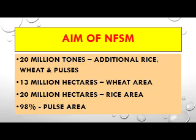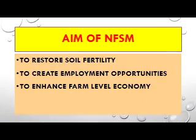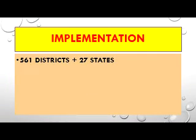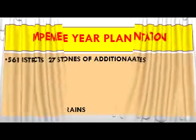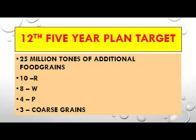The Mission covers about 13 million hectares of wheat area, 20 million hectares of rice area, and 98 percent of pulses area. The Mission also aims to restore soil fertility, to create employment opportunities, and to enhance the farm-level economy. The National Food Security Mission is being implemented in 561 districts in 27 states.